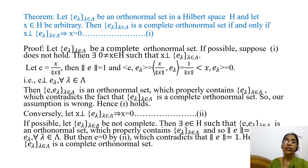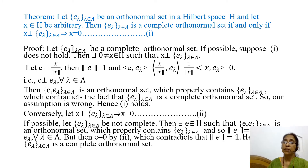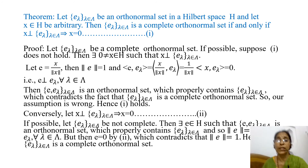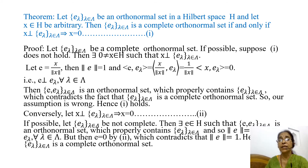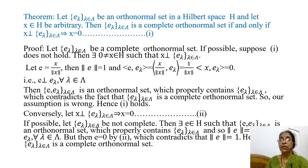Now we will prove a theorem related to complete orthonormal sets, which states: let {E_λ : λ ∈ Λ} be an orthonormal set in a Hilbert space H and let x ∈ H be arbitrary. Then this set is a complete orthonormal set if and only if x orthogonal to {E_λ : λ ∈ Λ} implies x = 0. That is, we have to prove that {E_λ} is a complete orthonormal set if and only if any vector which is orthogonal to each vector of this set must be the zero vector.